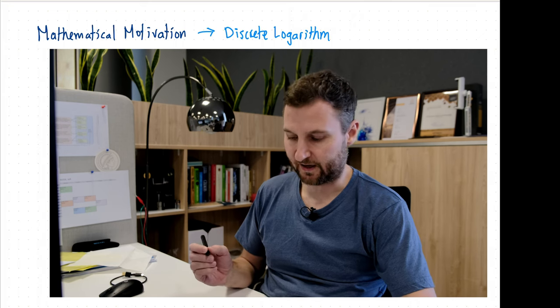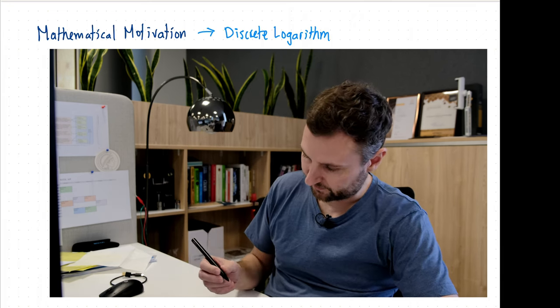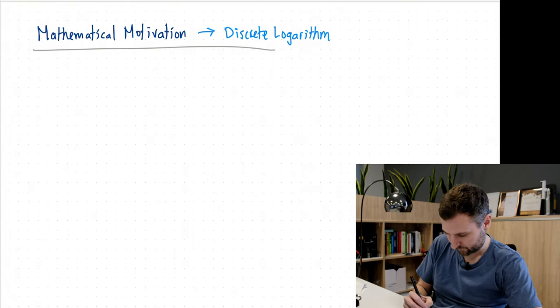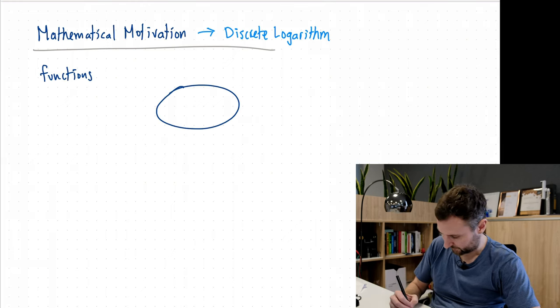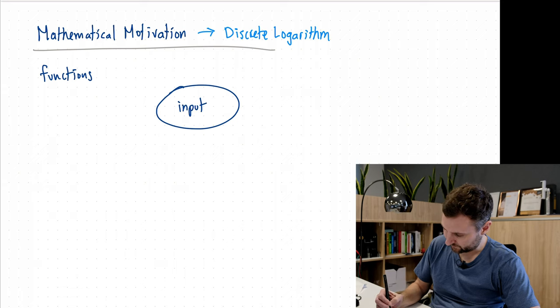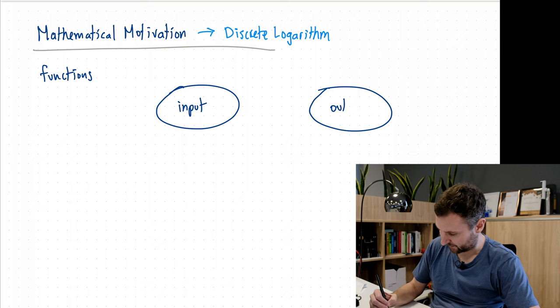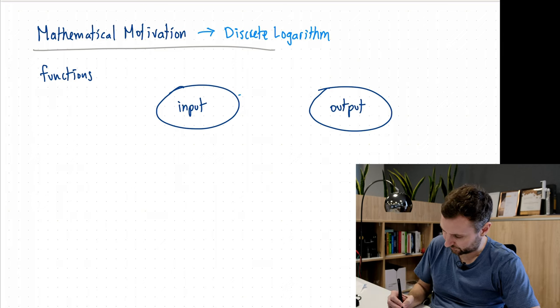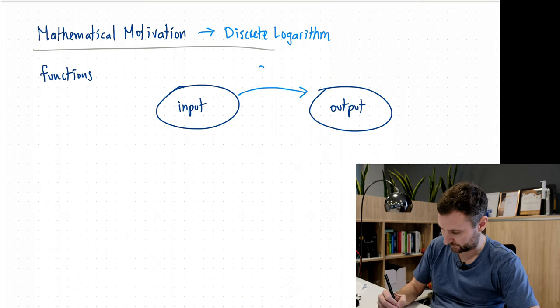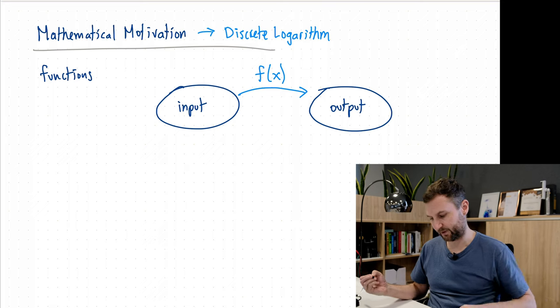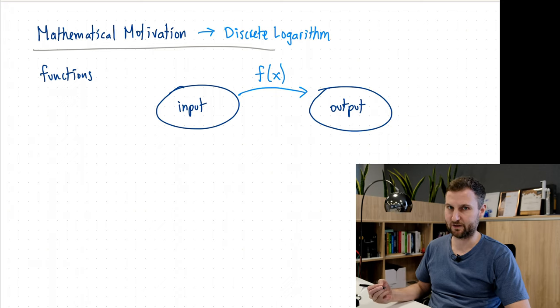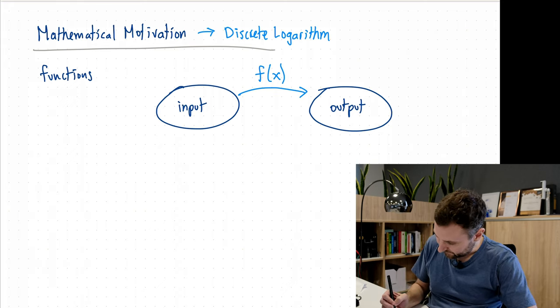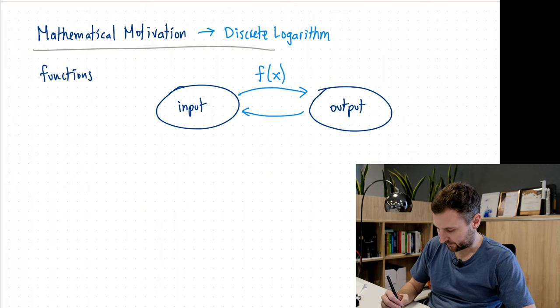First, let's look at functions. A mathematical function has some input and some output, and the function itself gets us from the input to the output. That could be like f(x). We're going to look at one-way functions and two-way functions. If I can go from the output and come back to the input, this is a two-way function.